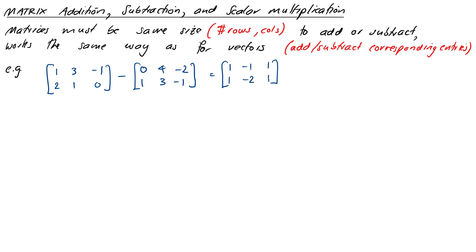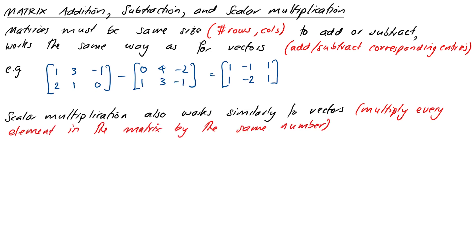And just as for addition and subtraction, scalar multiplication also works similarly to vectors - we multiply everything in the matrix by that same scalar. For example, 3 times the matrix [-1, 2; -2, 3] equals [-3, 6; -6, 9]. This isn't really surprising because we're treating matrices as vectors in R^(m,n) that have been rearranged.